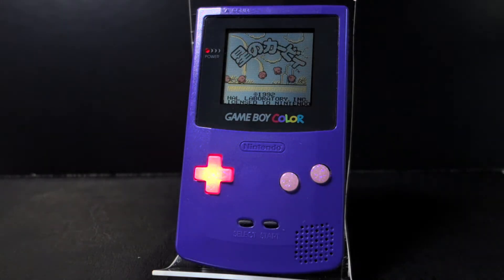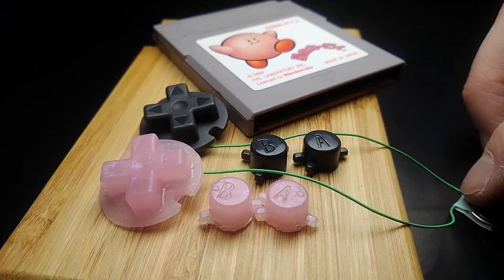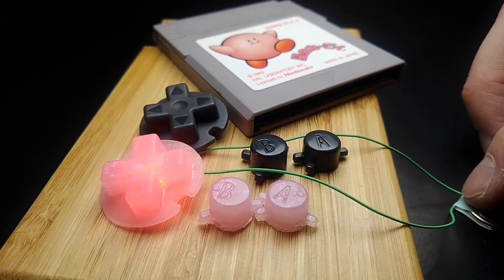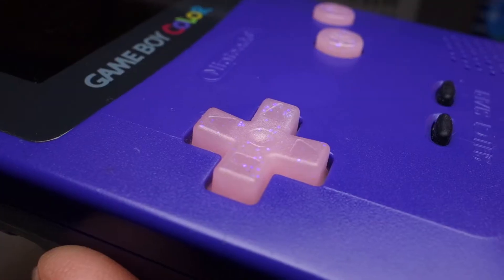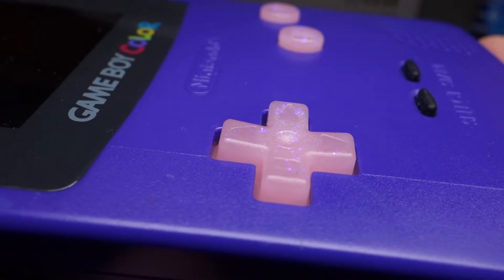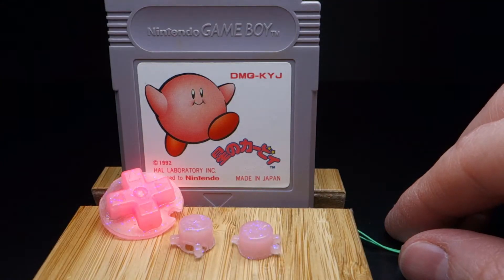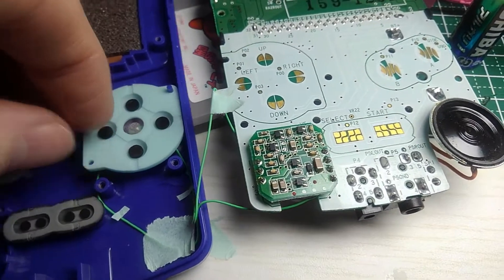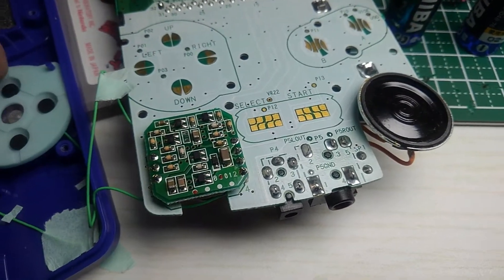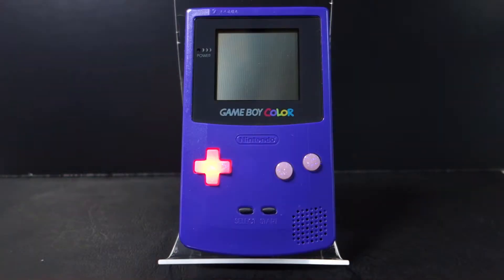Welcome back refurbers and scruffy looking nerve herders. In today's video, I'll show you how to make custom UV resin buttons with an LED encased inside. And if you stick around to the end, I'll even show you how to connect the LEDs to your Game Boy Color to get it powered up.